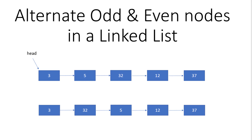Welcome to Coding Simplified. We have a new linked list problem where we are given a linked list and need to arrange it in alternating odd and even nodes - first an odd node, then an even node, alternating till the end. For example, if we have 3, 5, 32, 12, and 37 in random order, after converting we should have alternating odd and even nodes.